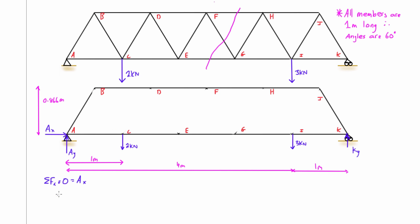The sum of forces in the y direction is Ay plus Ky minus 2 minus 3 kilonewtons. And then the sum of moments about A has these three components. So if we just simplify that we get Fy is 2.8 and then Ay is 2.2.